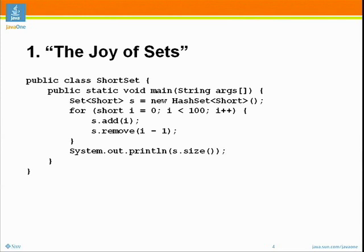First we add 0, and we remove i minus 1 — that's like the previous element. In the first case, we're going to try to remove negative 1. The set doesn't contain negative 1, so that's a no-op. Second time through the loop, we add 1 and remove 0, leaving 1. Next time, we add 2 and remove 1, leaving 2. So each time through the loop, we only have the most recently added element.